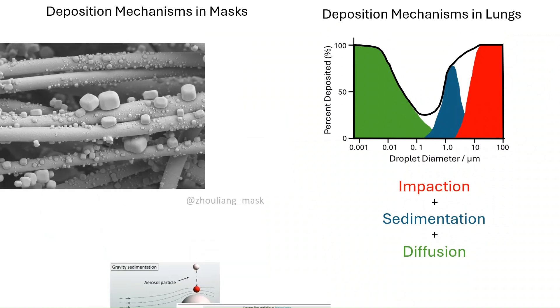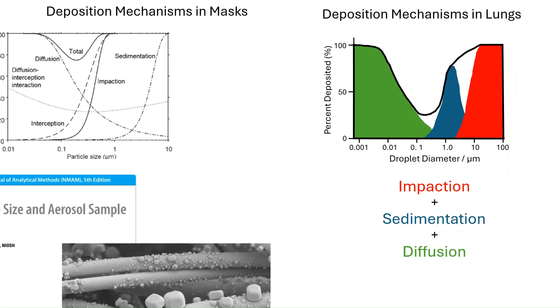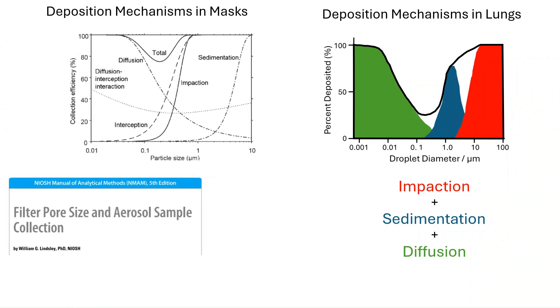And for both, as soon as the aerosol contacts the surface, it sticks. So in both masks and lungs, the aerosol larger than about 0.5 microns is deposited by impaction and sedimentation. And the aerosol smaller than about 0.5 microns are deposited by diffusion. And this leads to the characteristic minimum deposition fraction of around 0.2 microns. So the physics, the weird wonderful physics of aerosol is the same for both systems.